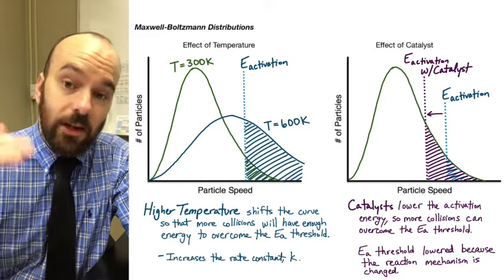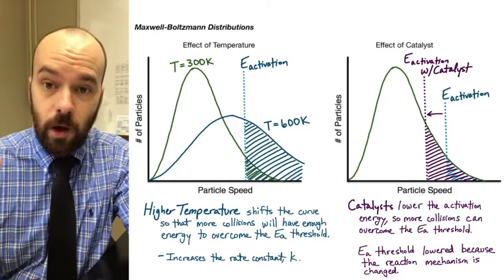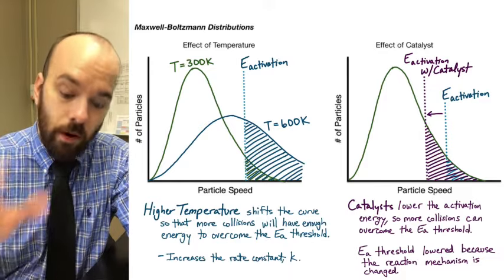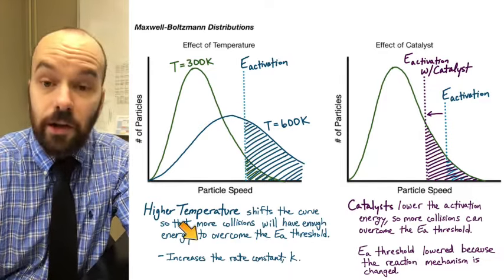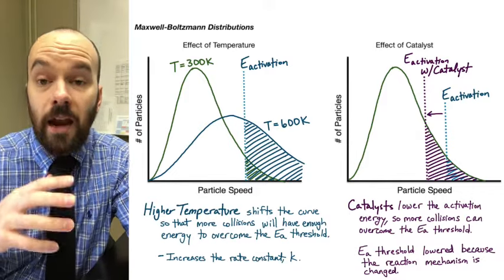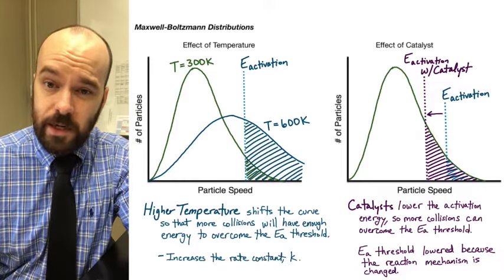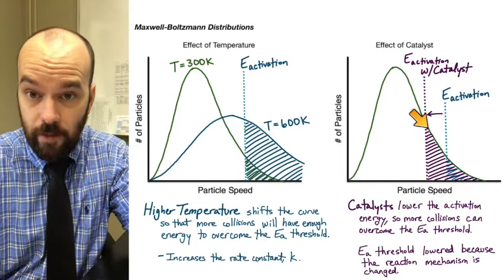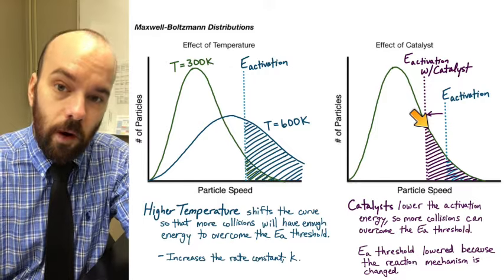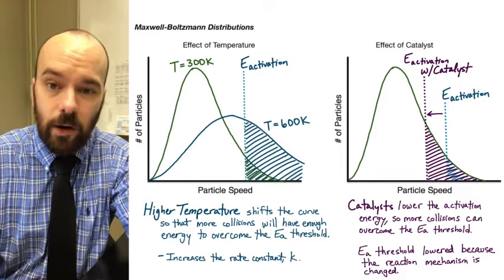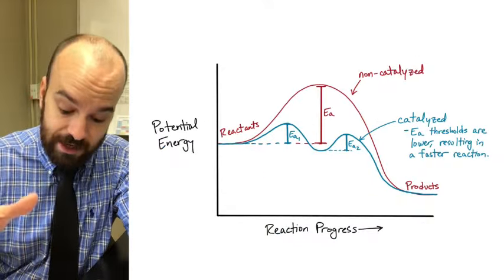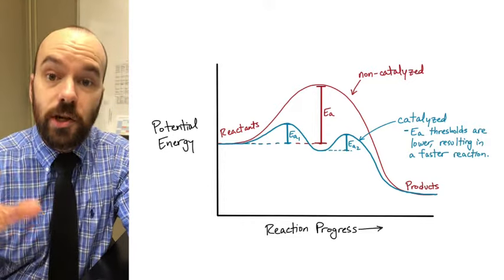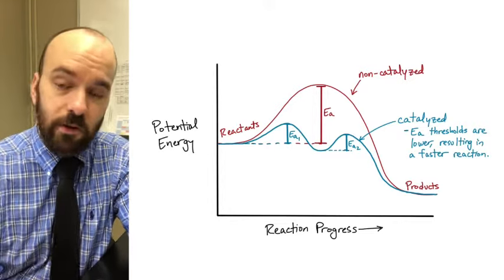To summarize everything: an increased temperature results in a faster reaction — it shifts the Maxwell-Boltzmann distribution to the right over higher speeds, resulting in more particles that can overcome the activation energy barrier, and increases the rate constant K. In the presence of a catalyst, the molecules aren't moving faster, but the activation energy threshold is lowered on the Maxwell-Boltzmann distribution, so more particles can overcome it. A catalyzed reaction achieves this by breaking a high activation energy one-step reaction into smaller steps, each with a lower activation energy, resulting in a much faster reaction.